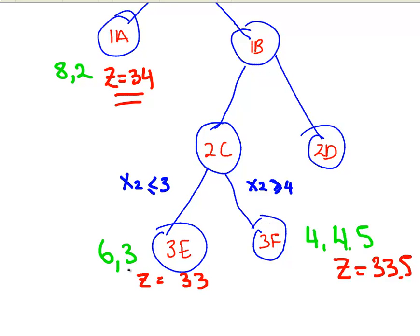Here, the solution we would have got is 6 and 3, x1 is equal to 6, x2 is equal to 3. Our realization of the objective function there is 33.